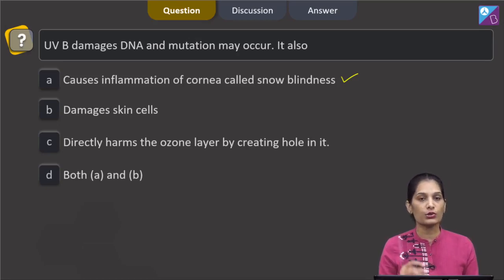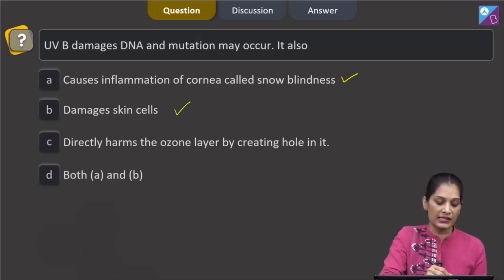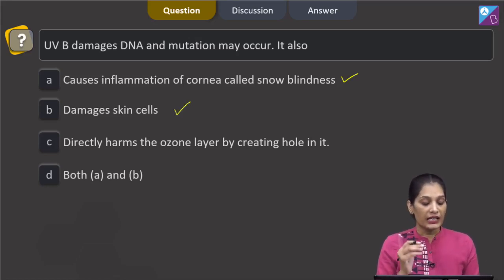Yes, it is also absolutely true that UVB radiations can harm your skin and they cause the damage to the skin cells. Third, they directly harm the ozone layer by creating hole in it. No, UVB radiations do not directly harm the ozone layer. Instead, they break the CFCs molecules.